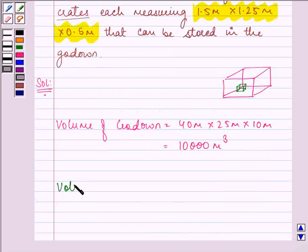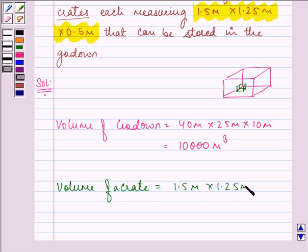Volume of one crate is equal to 1.5 meter into 1.25 meter into 0.5 meter. It is equal to 0.9375 meter cube.